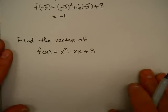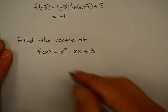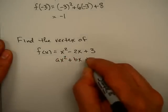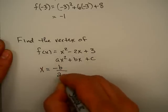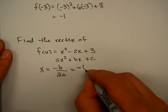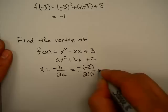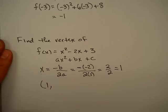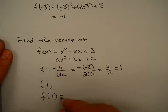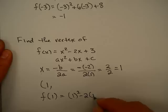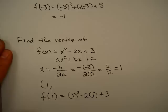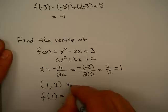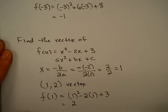Let's try this method with another example. This is ax squared plus bx plus c, and the axis of symmetry is negative b over 2a. Here b is negative 2 and a is 1, so that's 2 over 2, which equals 1. The axis of symmetry is x equals 1, so the x-coordinate of the vertex is 1. Plugging 1 in for x: 1 minus 2 plus 3 gives positive 2. So the vertex is (1, 2). I hope you found this video useful.